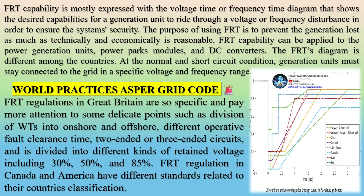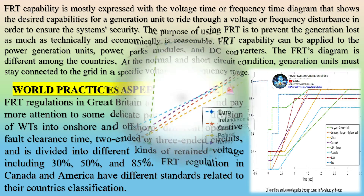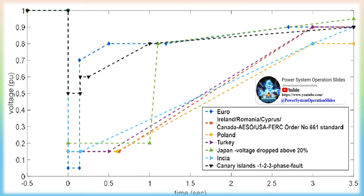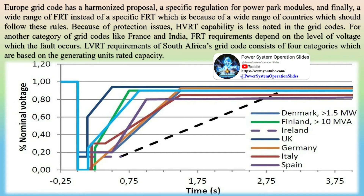FRT capabilities vary from equipment to equipment, and sometimes it takes a few seconds before the voltage returns to nominal level. In a PV system, FRT functionality allows it to continue operating even if the grid experiences a period of reduced voltage lasting one second or less. Specifically, when the FRT function operates, it is necessary to observe the voltage waveform for about five seconds after the drop to verify grid stability. A power quality analyzer capable of capturing the power situation before and after such an event is useful. FRT capability is mostly expressed with the voltage-time or frequency-time diagram that shows the desired capabilities for a generation unit to ride through a voltage or frequency disturbance.